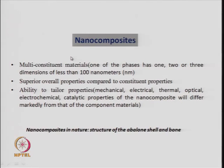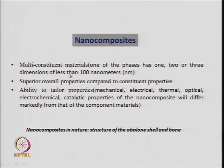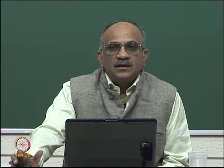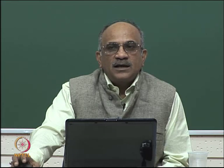Nano composites are multi-constituent materials where one of the phases has one, two, or three dimensions of less than 100 nanometers. That means one of the ingredients is a nano material — it may be a nano particle, a nano wire, or a nano plate. The mixture of that nano-sized particle with some other material, which may have micron-sized particles or may be a polymer, will be called a nano composite.